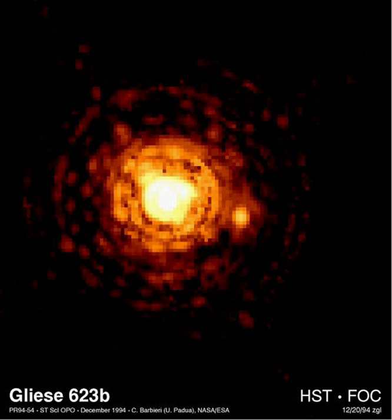Even the largest red dwarfs — for example HD 179930, HIP 12961, and Lacaille 8760 — have only about 10% of the Sun's luminosity. In general, red dwarfs less than 0.35 solar masses transport energy from the core to the surface by convection. Convection occurs because of opacity of the interior, which has a high density compared to the temperature. As a result, energy transfer by radiation is decreased, and instead convection is the main form of energy transport to the surface of the star. Above this mass, a red dwarf will have a region around its core where convection does not occur.